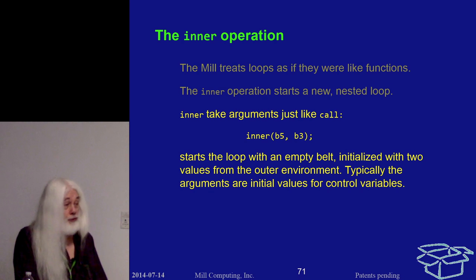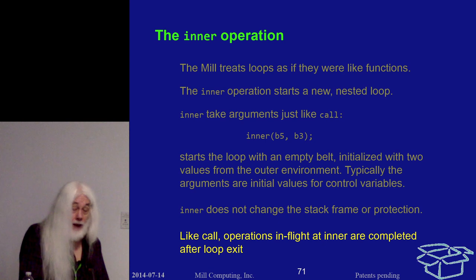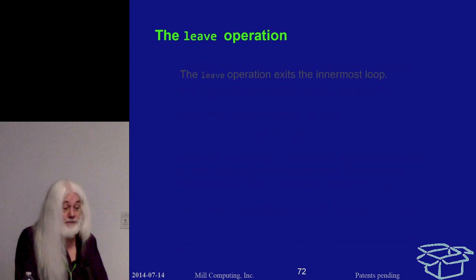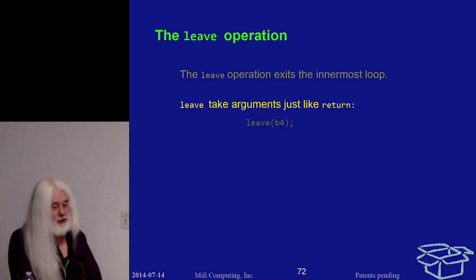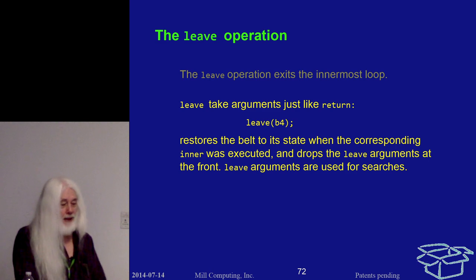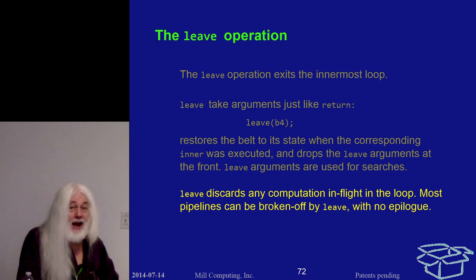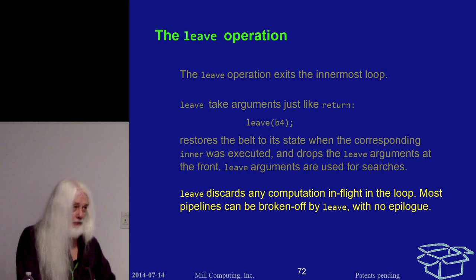The Mill treats a loop body — actually the entirety of a loop including its predicate and control — as if it were a function. The 'inner' operation starts a new nested loop; it takes arguments just like a call. You get an empty belt initialized with those arguments, typically initial values for control variables. It does not change the stack frame. 'Leave' is the corresponding return or break from a loop — it takes arguments like a return, restores the belt to the state when the corresponding 'inner' was executed, and drops the leave arguments at the front.